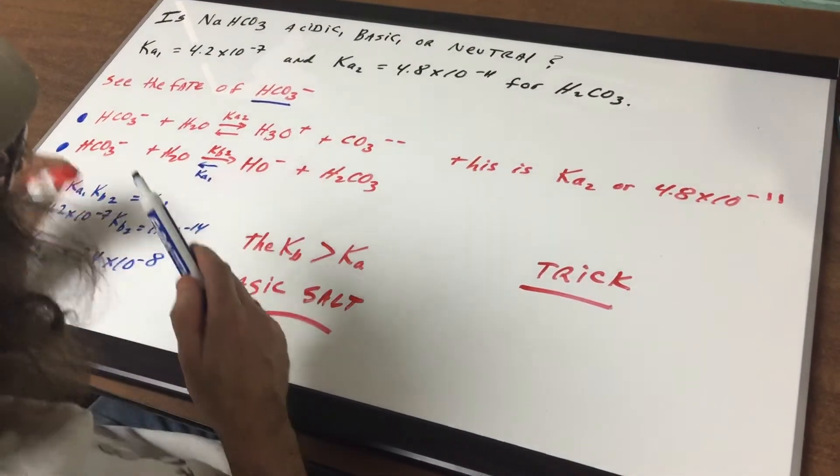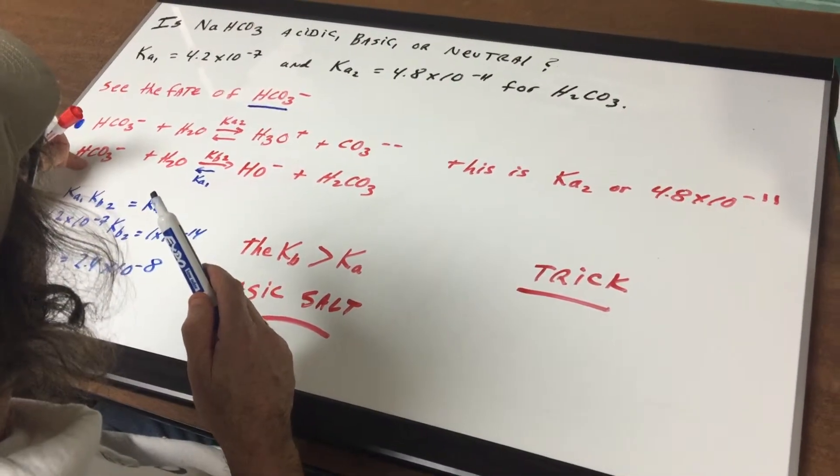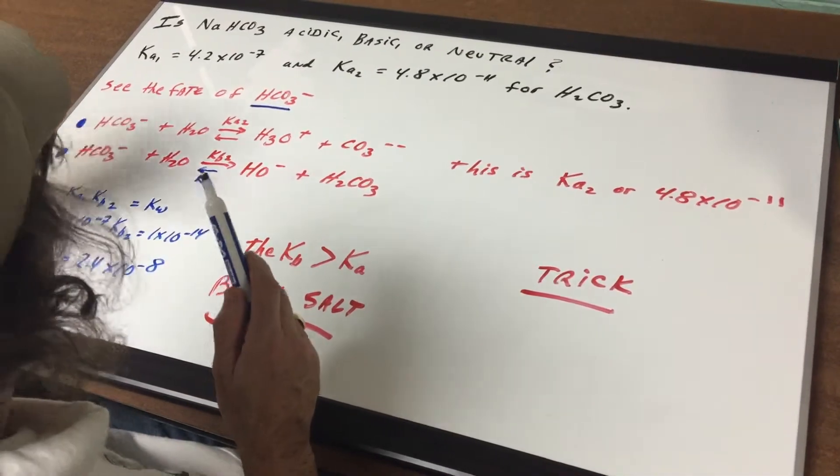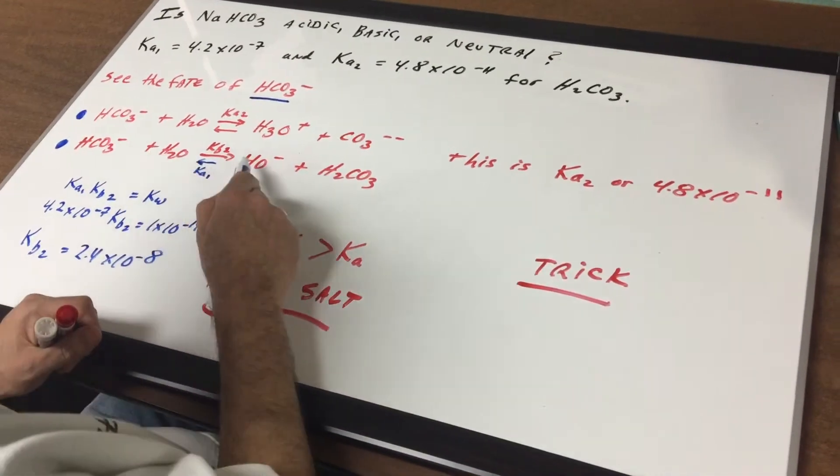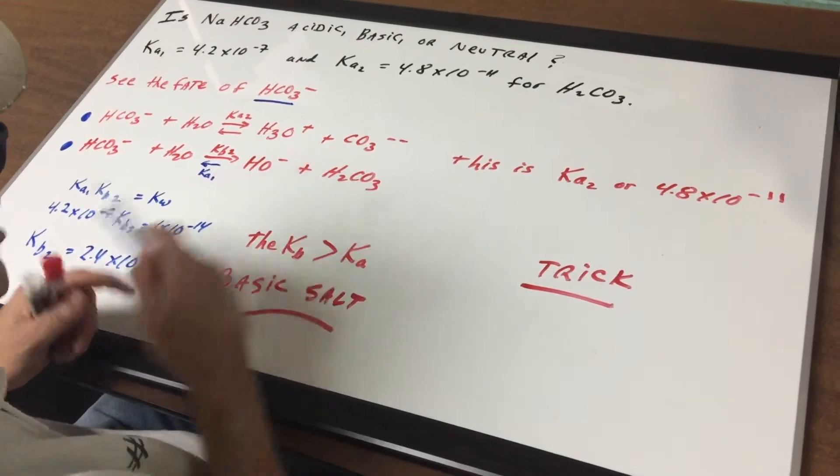Now let's check to see what would happen if it acted as a base. Instead of giving an H, it'll receive an H. So if it takes off an H from water, you get OH minus and H2CO3.